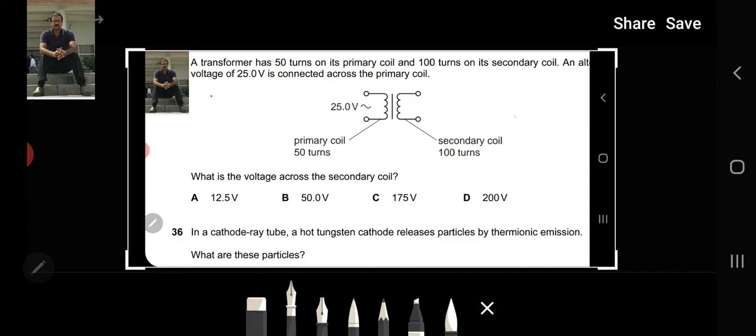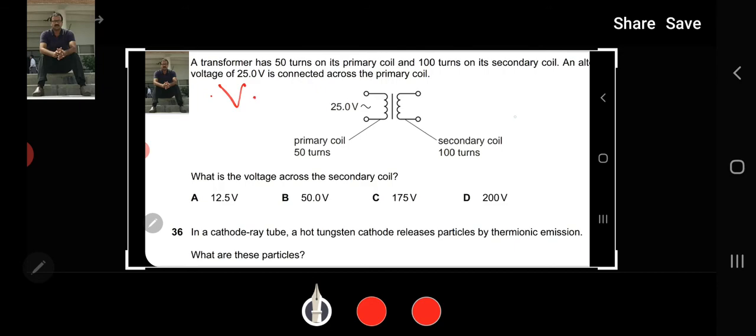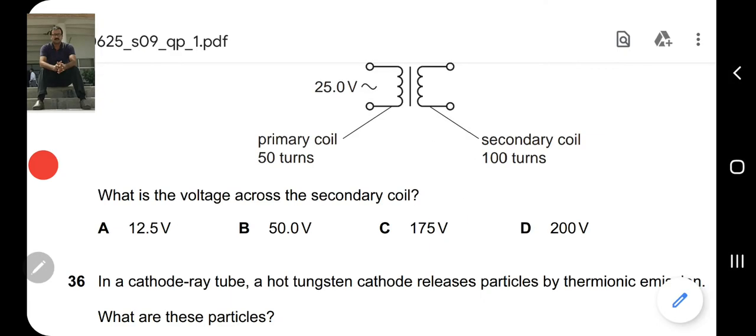If you want to use the formula, it's simple: Vs over Vp equals Ns over Np. Using this formula, you can easily find the voltage of the secondary coil. With mental math or formula, 25 doubled is 50 volts. The right option is B. I hope this is clear.